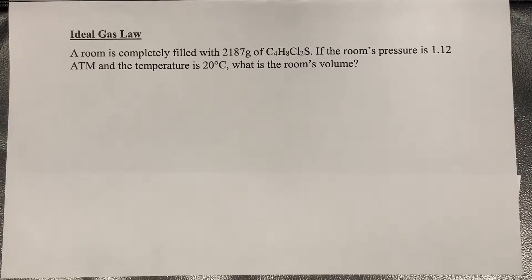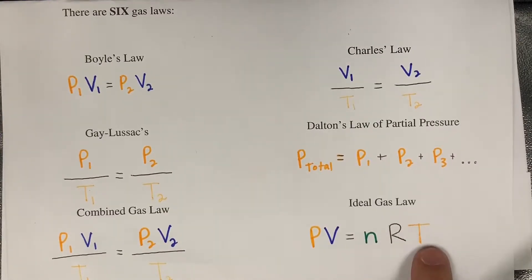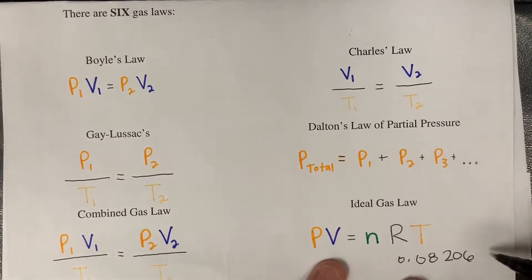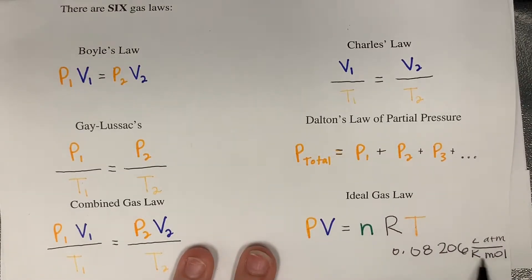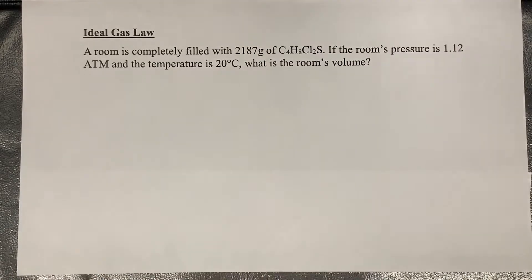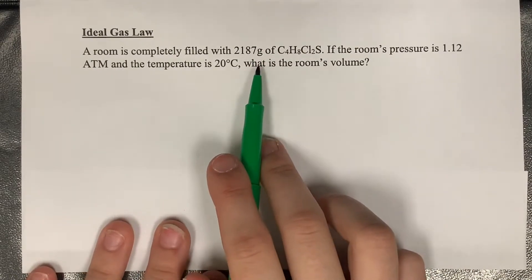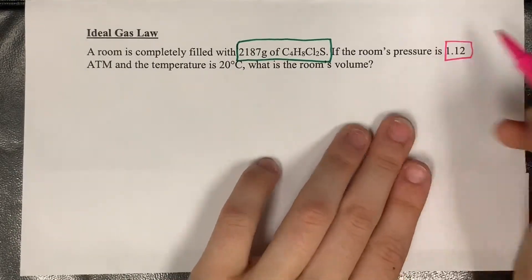Now for the final gas law: ideal gas law. Ideal gas law is different from all the other ones because this one deals with pressure, volume, moles, universal gas constant R, and temperature T. N is moles. The universal gas constant R is 0.08206 liters of ATM over Kelvin per mole. Notice these are all standardized units for gas laws — everything needs to be in one of those four units before calculating. The equation: a room is completely filled with 2,187 grams of C4H8Cl2S. The room's pressure is 1.12 ATM and the temperature is 20 degrees Celsius. What's the room's volume? We notice that we have grams, but in the equation there are no grams — we have moles instead. So we need to convert grams into moles.